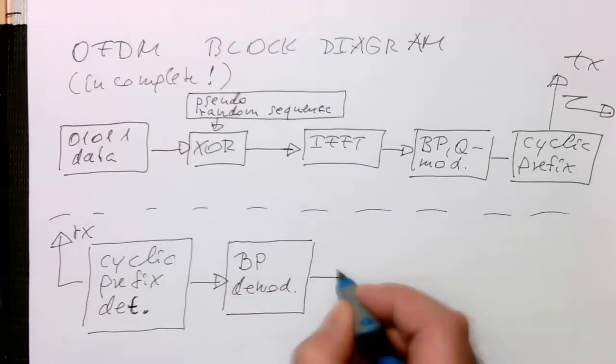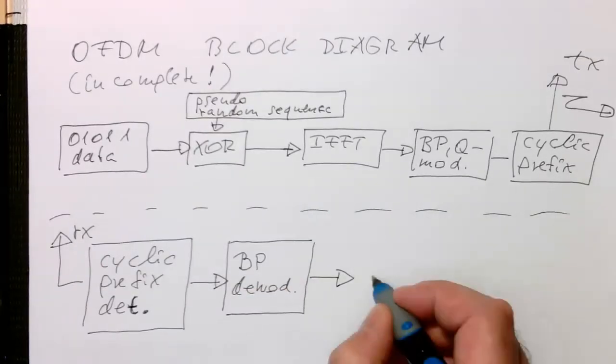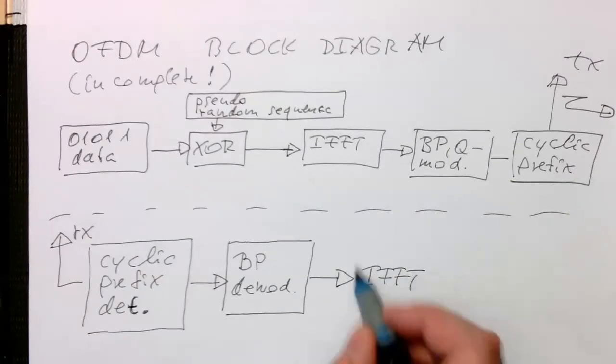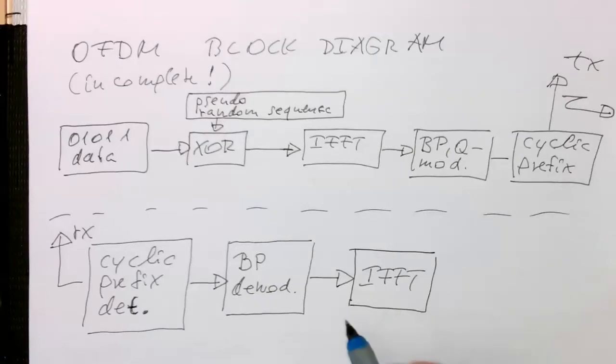With that, we can do our inverse Fourier transform. As we know, the inverse Fourier transform needs to know exactly the start of the symbol.